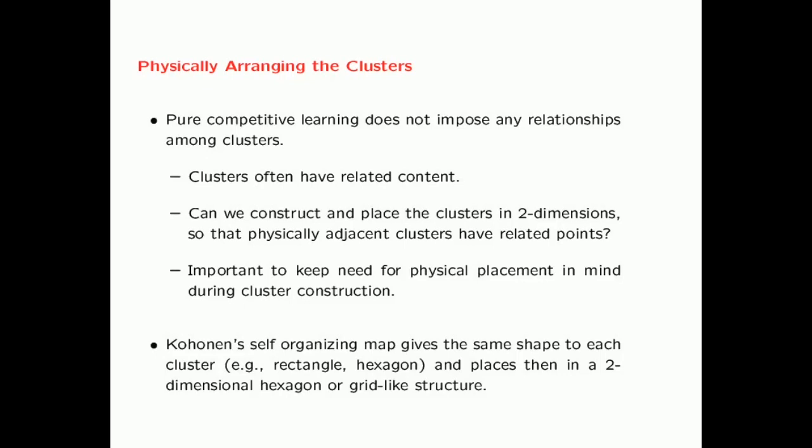The Kohonen Self-Organizing Map achieves these goals. It gives the same shape to each cluster — for example, a rectangular shape or a hexagonal shape — as a conceptual representation of the cluster. It then places them in either a two-dimensional hexagonal or grid-line structure. Depending on whether you choose a rectangle or a hexagon, the clusters will be placed in different types of arrangements.